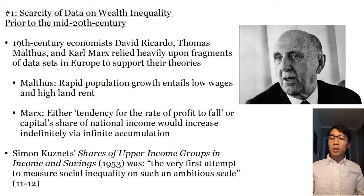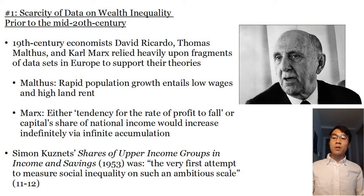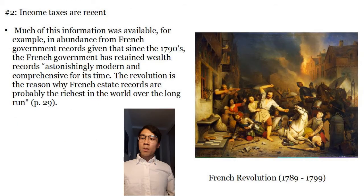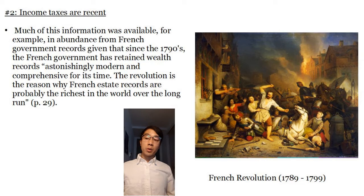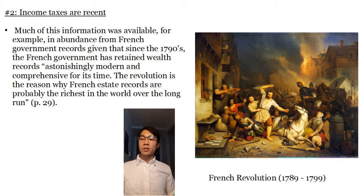Simon Kuznets' Share of Upper Income Groups in Income and Savings, 1953, was, according to Piketty, the very first attempt to measure social inequality on such an ambitious scale. This is largely due to tax records available to the United States since 1913, the initial date of income tax being imposed in the US. Much of this information was available in abundance from French government records, given that since the 1790s the French government had retained wealth records astonishingly modern and comprehensive for their time. The revolution is the reason why French estate records are probably the richest in the world over the long run.